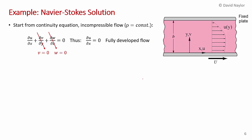This is the incompressible form of the continuity equation. We're told that V and W are zero everywhere, so their gradients are zero, and you get that ∂u/∂x = 0. This tells you that the velocity profile is not changing in the x-direction — you get the same profile at any x-location. This is called fully developed flow, which occurs far from the entrance of the plates or a pipe.